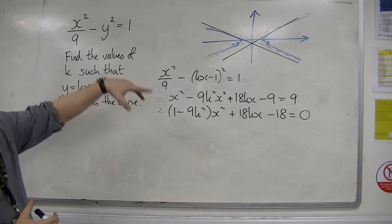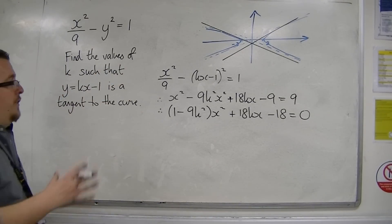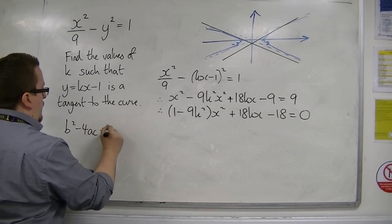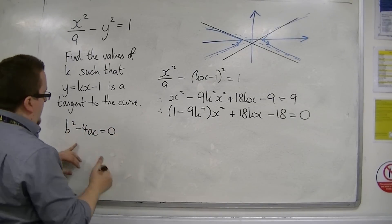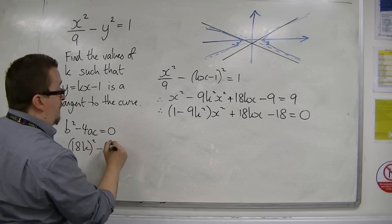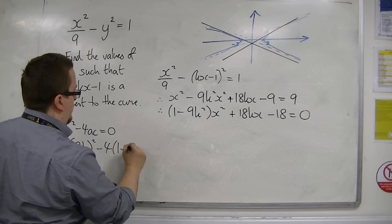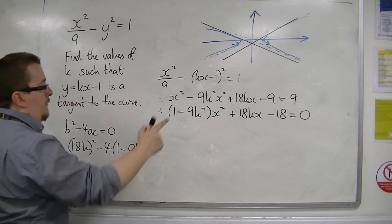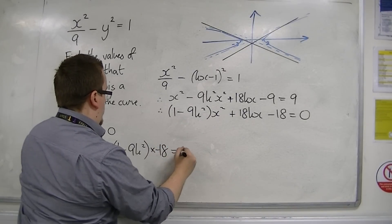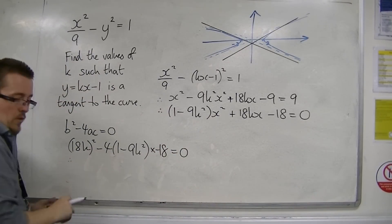So this is the equation that I'm working with. Now, I want where these lines are going to be tangent. So the discriminant is going to be equal to 0. So b is 18k, so 18k squared take away 4 lots of a times c, which is minus 18.